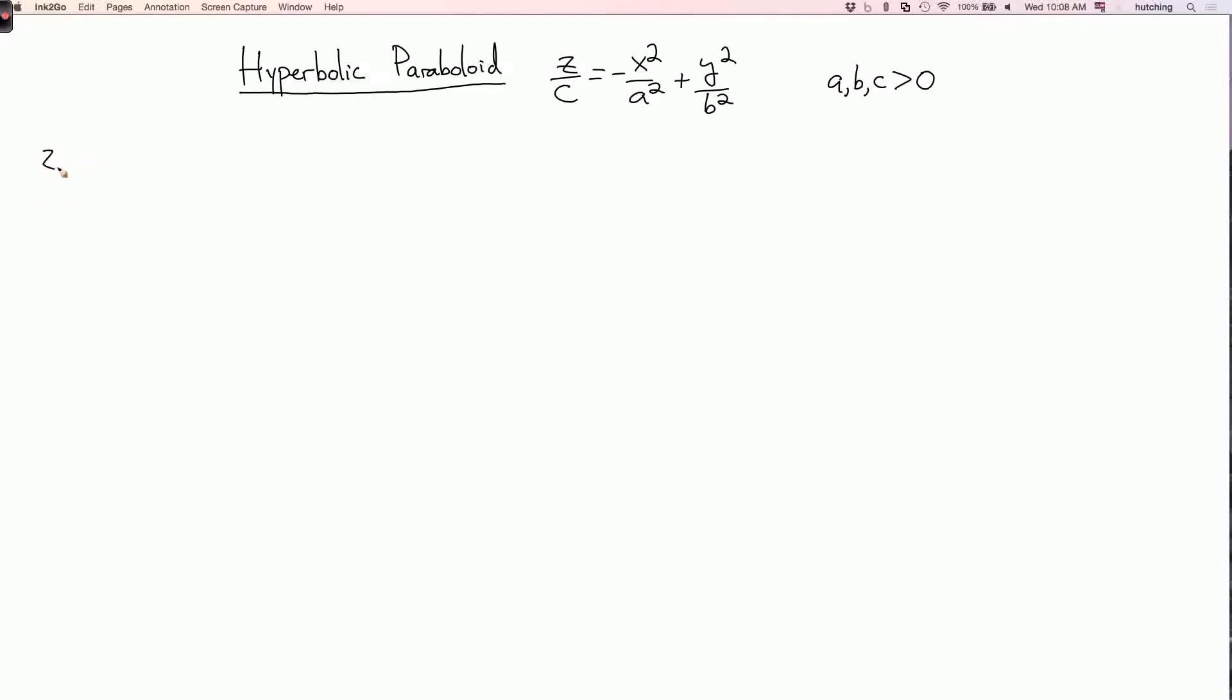So we can first set z equals zero to find the intersection of the surface with the xy plane. And then we get the equation y²/b² = x²/a². We've seen something like this before. We can take the square root of both sides to get y/b = ±x/a. And the solution set in the xy plane is two lines. One of the lines goes through the origin and has slope b/a, and the other line goes through the origin and has slope -b/a.